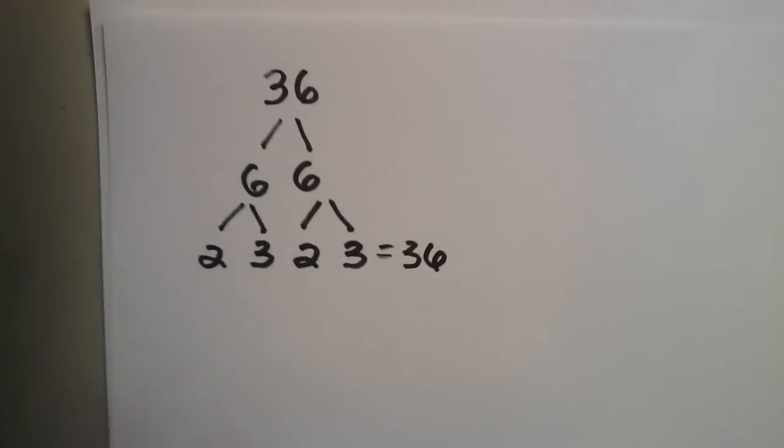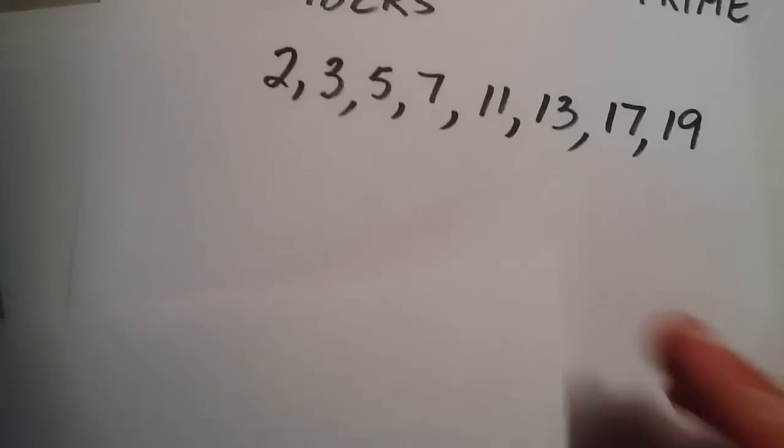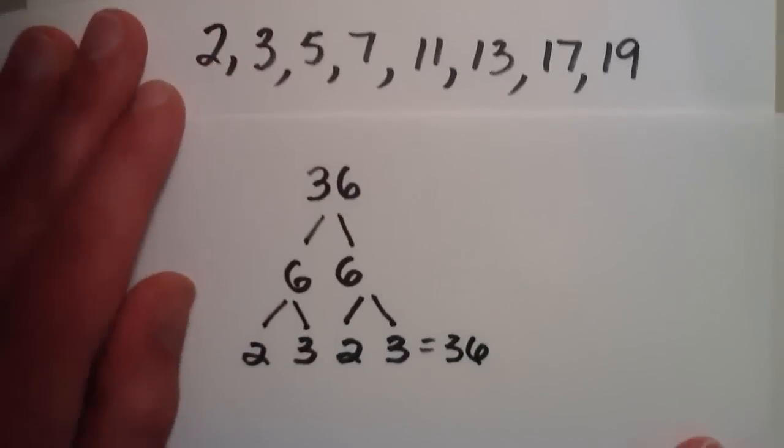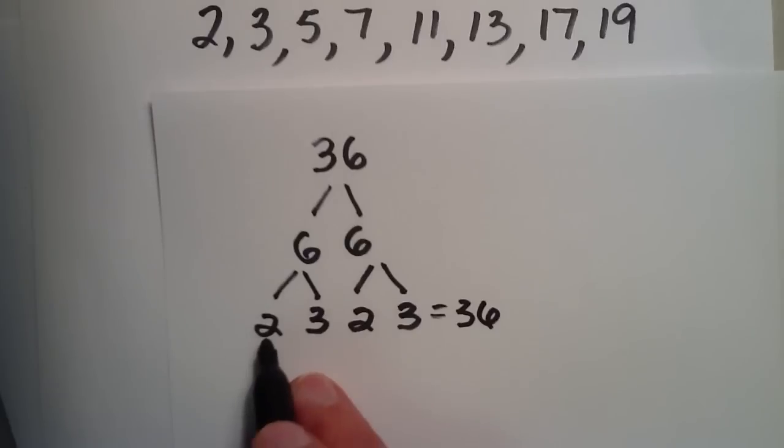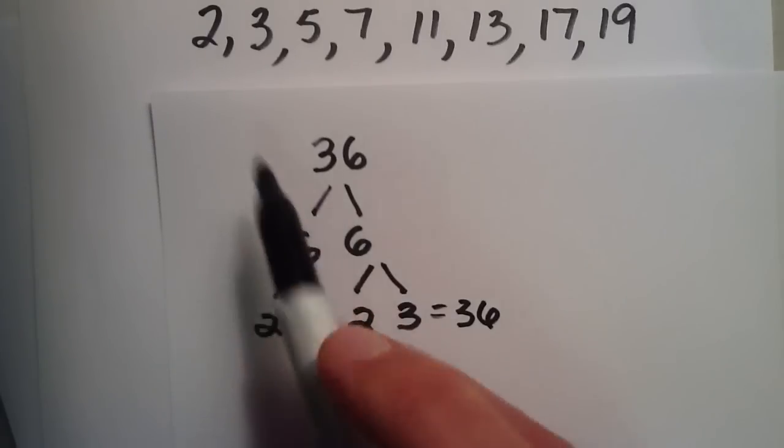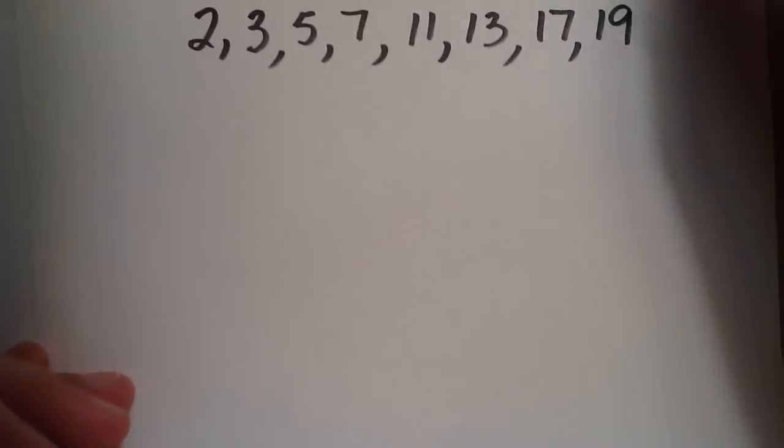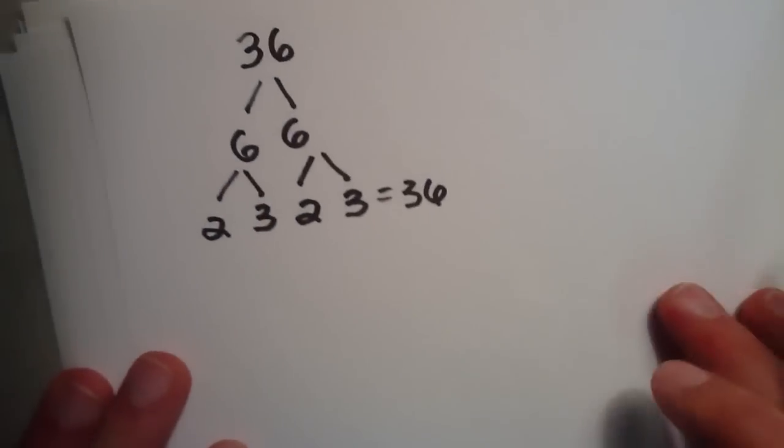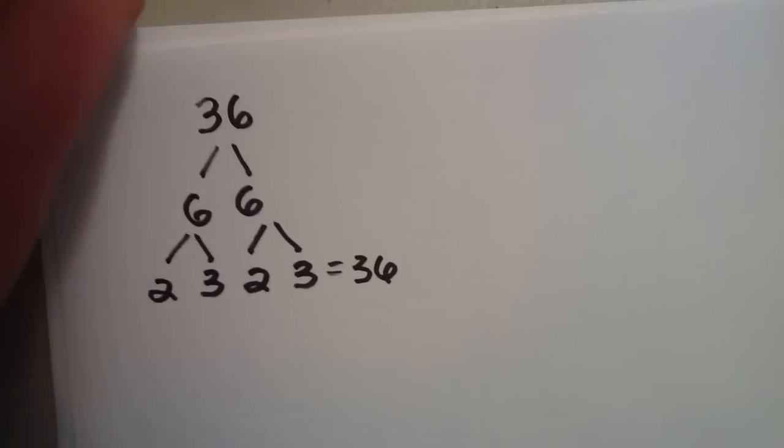And if you notice from the previous paper here, 2 and 3 are both prime numbers. So we've broken down 36 into its prime components.